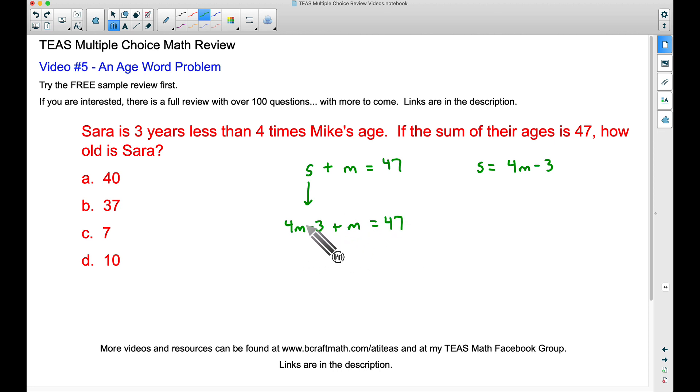With this equation, we're going to solve for M, which is Mike's age. Let's combine like terms: 4M plus 1M is 5M. Bring down the minus 3 and this equals 47. Our next step is to add 3 to both sides. We're trying to get M by itself. So we're canceling out our 3s. We have 5M equals 50. So 5 times M equals 50. That's going to be 10, right? Just in case, we can divide both sides by 5. 5 divided by 5 gives us 1, so we have M equals 50 divided by 5, which is 10.